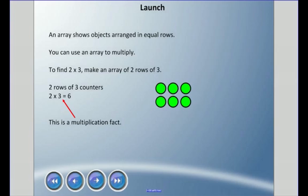An array shows objects arranged in equal rows, and you can use an array to multiply. To find 2 times 3, we can make an array of 2 rows of 3. Just to clarify, these are rows and these are columns. So we have 2 rows of 3.